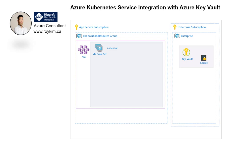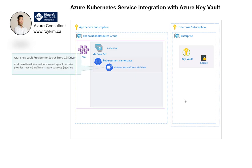We have this AKS cluster in the AKS-Solution resource group, and we want to have a Key Vault integrated into it. In order to enable this integration, we need to have an add-on into AKS called the Azure Key Vault Provider for Secret Store CSI Driver. It can be enabled through the Azure portal in one of the AKS configuration settings, or with Azure CLI you can run a command enabling this particular add-on.